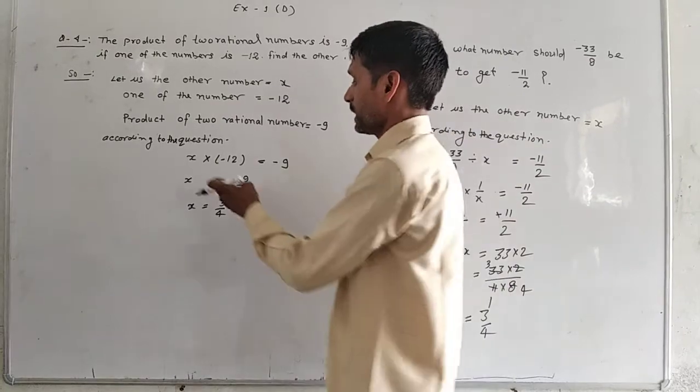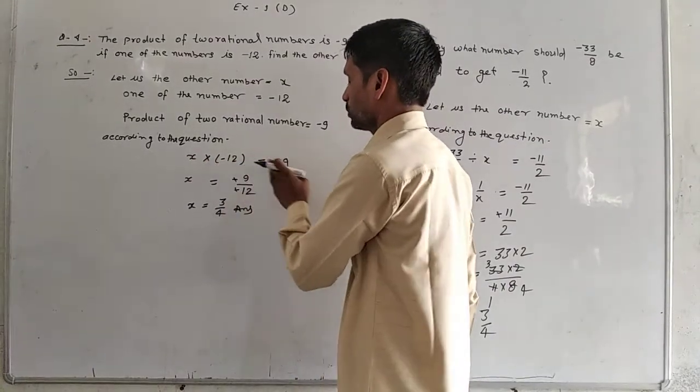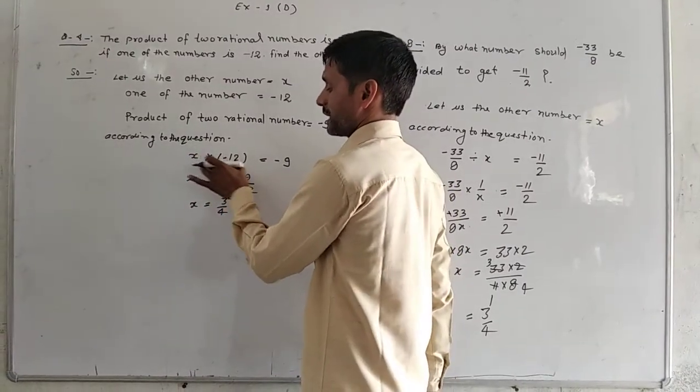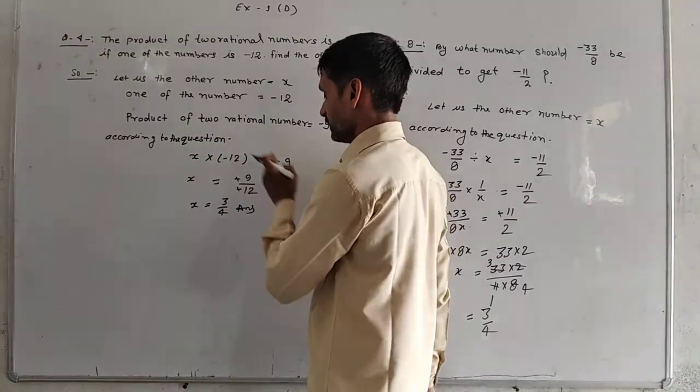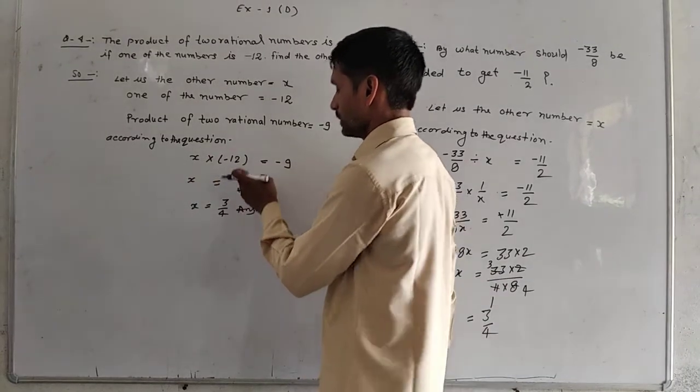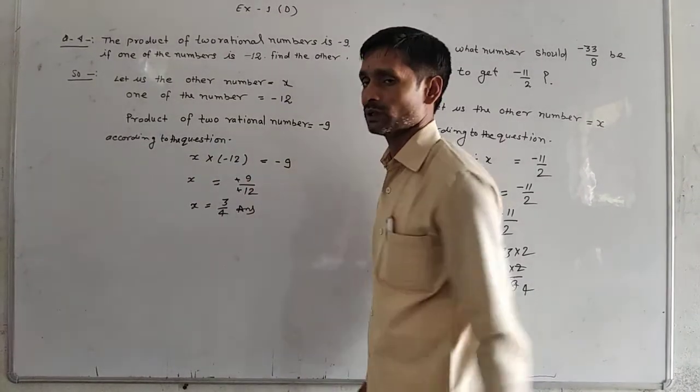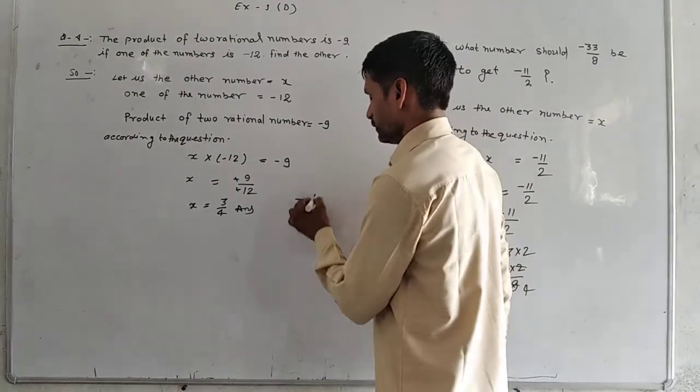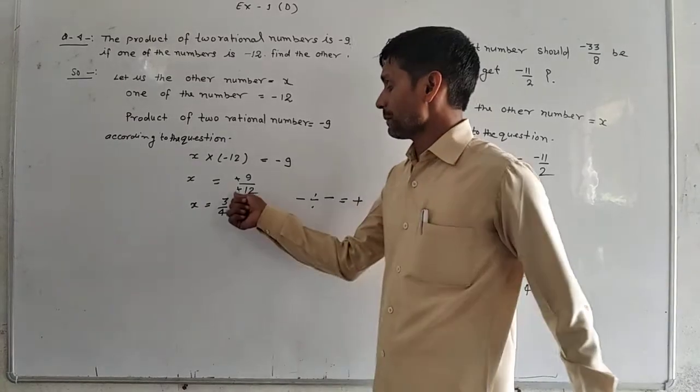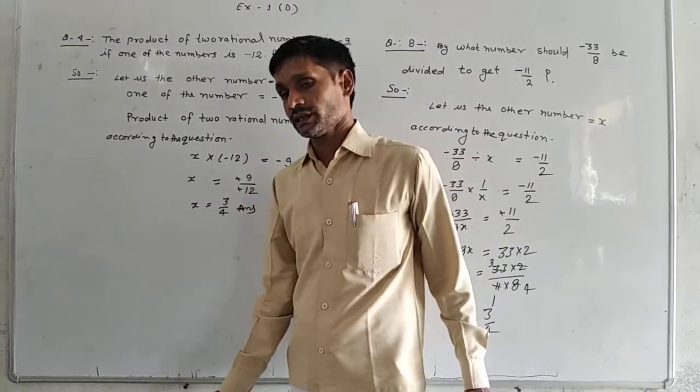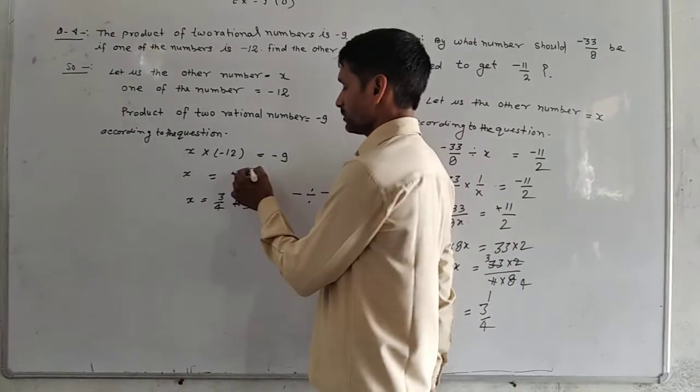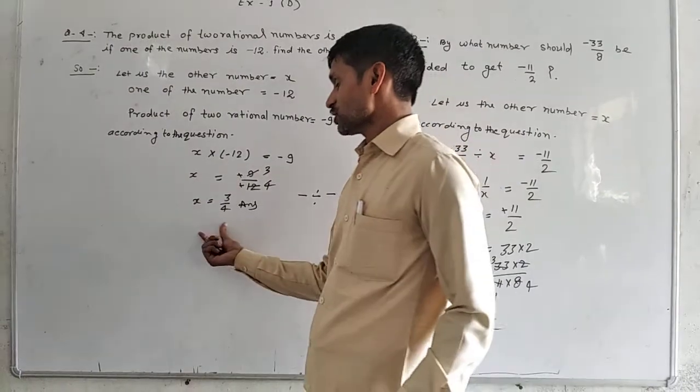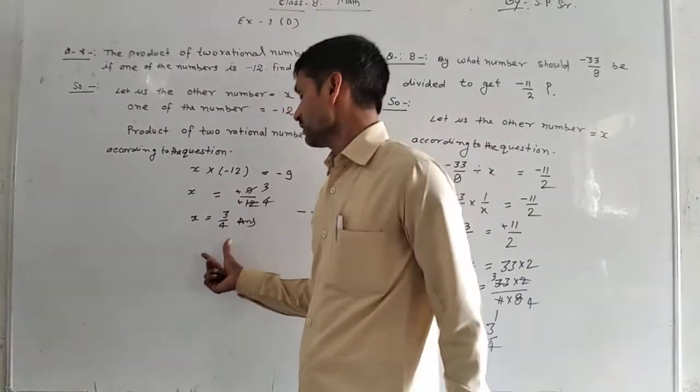We divide: minus nine divisible by the given number. Minus divided by minus equals plus, so minus minus cross out. Now we simplify: 9 divided by 3 equals 3, and 12 divided by 4 equals 3. So x is equal to 3 upon 4.